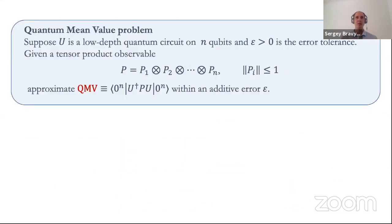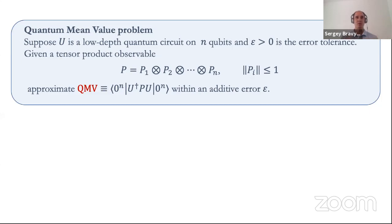Now comes the quantum part of VQE. We prepare a variational state psi and measure the expected value of our Hamiltonian. By linearity, it suffices to measure the expected value of each individual Pauli term. For that, we just measure each individual qubit in the eigenbasis of Pauli X, Y, or Z and classically compute the product of measured outcomes. The only quantum part of the VQE algorithm is preparing the variational state and measuring the expected value of some tensor product observable.